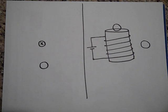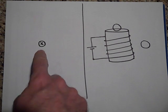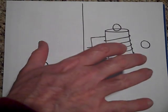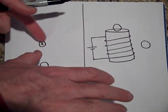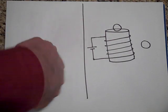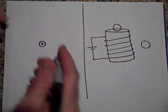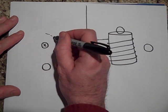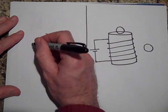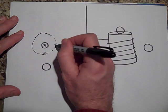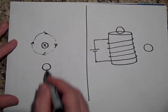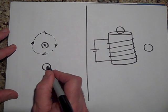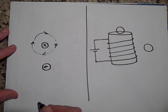All right, so that X means that the current is going into the page, because we're seeing the back of the feathers of the arrow. And I take and put my thumb in the direction of the current, and I just curl my fingers like that. And when I curl my fingers, that is going to show you the direction of the field. So the field is going to go like this.